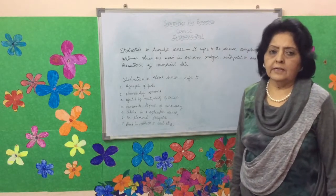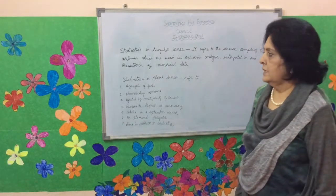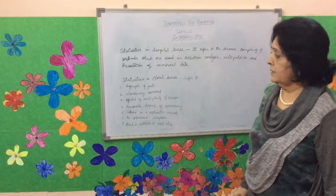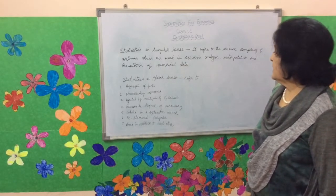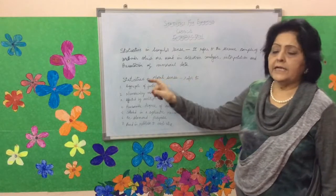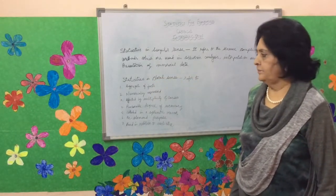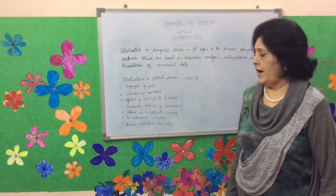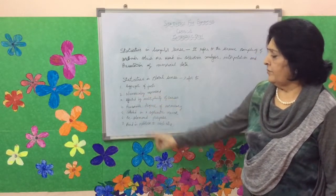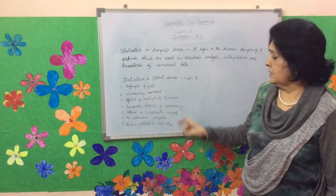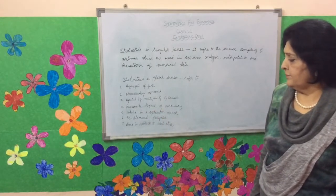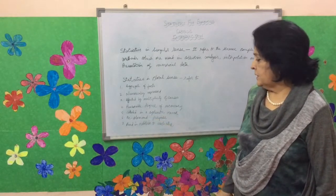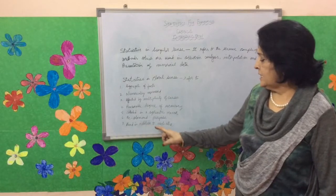Now we will understand statistics in the singular sense. Statistics in singular sense refers to the science comprising methods used in collection, analysis, interpretation, and presentation of numerical data. Statistics in plural sense refers to an aggregate of facts, numerically expressed, affected by a multiplicity of causes, collected with a reasonable degree of accuracy in a systematic manner, for a pre-determined purpose, and placed in relation to each other.